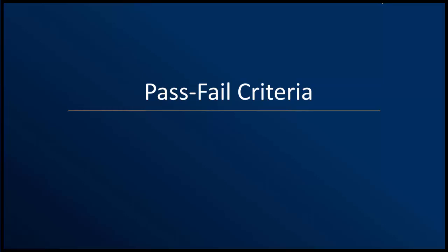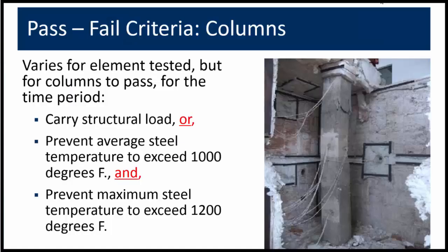We'll now review some of the typical pass-fail criteria for these major structural elements. For columns, the passing criteria is simply to carry the load for the desired time period while exposing it to the ASTM E119 fire curve in the furnace. Alternatively, if it can be demonstrated that the column steel temperatures do not exceed prescribed limits, then the column design can also be approved. The test standard provides detailed information about the number, location, and types of thermocouples used to measure the temperature of the steel within the column.